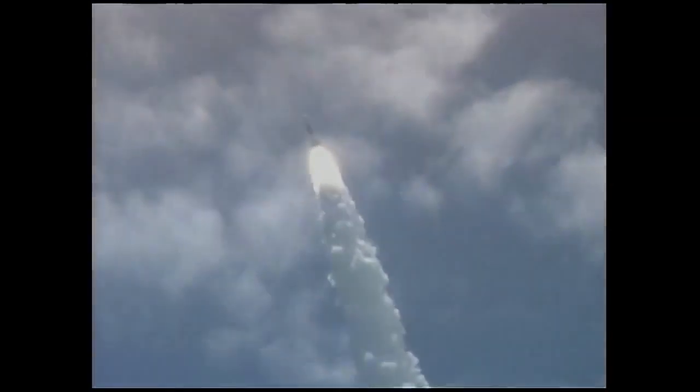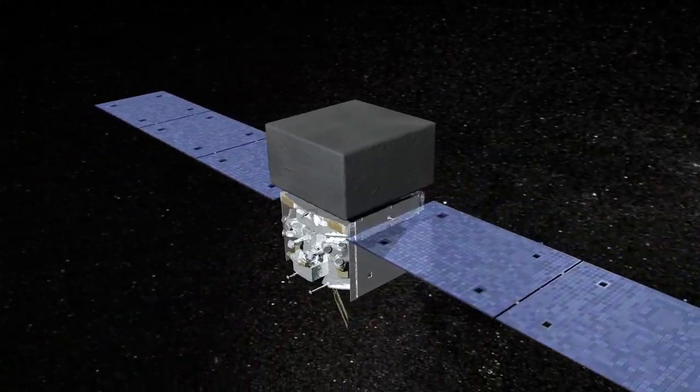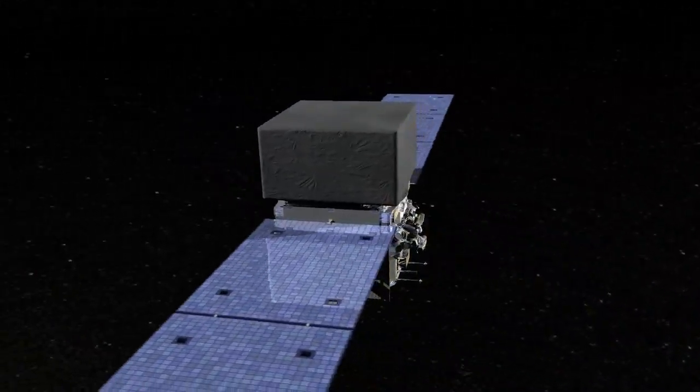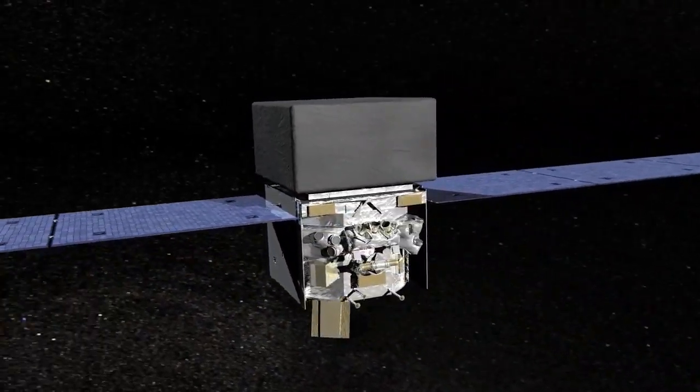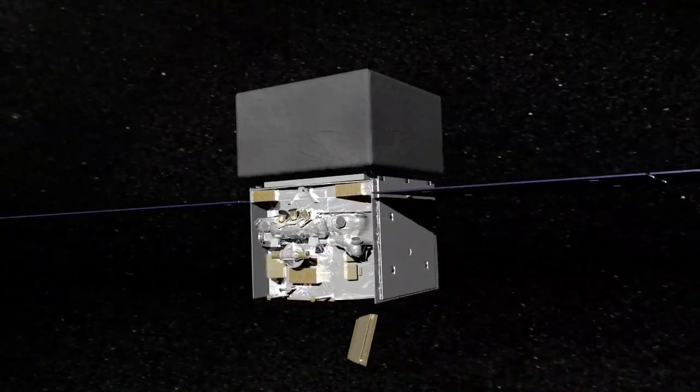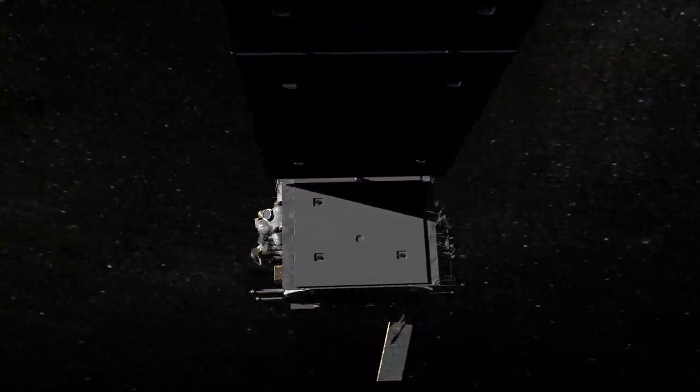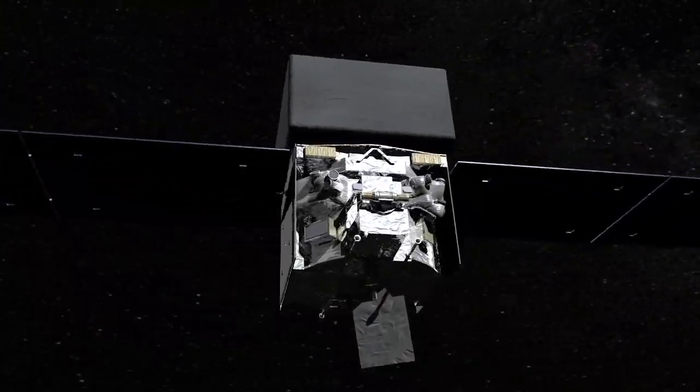Launched on June 11, 2008, GLAST, renamed the Fermi Gamma-ray Space Telescope, has been collecting gamma-ray data for five years. In that time, it has made some astounding observations of some of the most powerful events and objects in the universe, including some right on our doorstep.